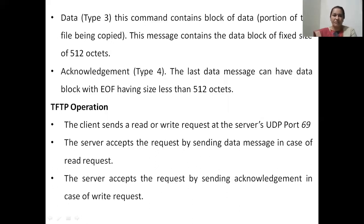The third type of TFTP message is the data message. This contains a block of data which is a portion of the file being copied. The size of the data block is fixed — it is 512 octets. The fourth type of TFTP message is the acknowledgement message, which is also a fixed size message of 512 octets. This is the acknowledgement sent back by the receiver to the sender if the message was received error-free.